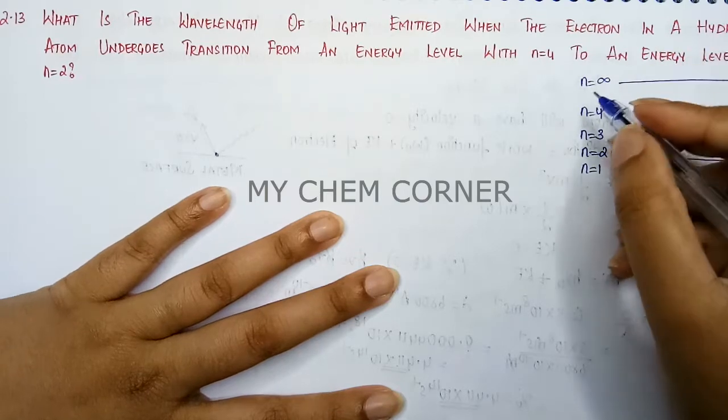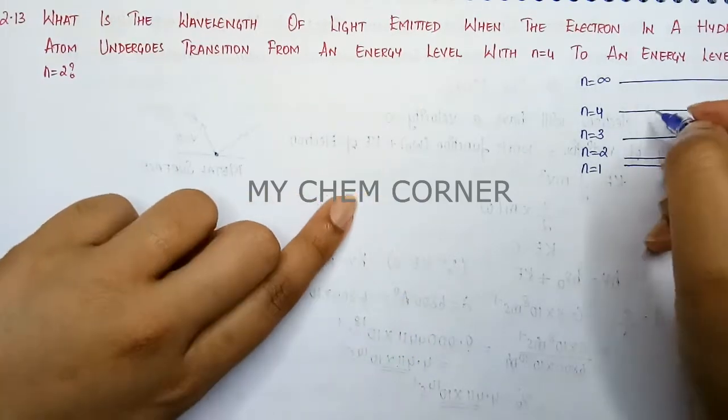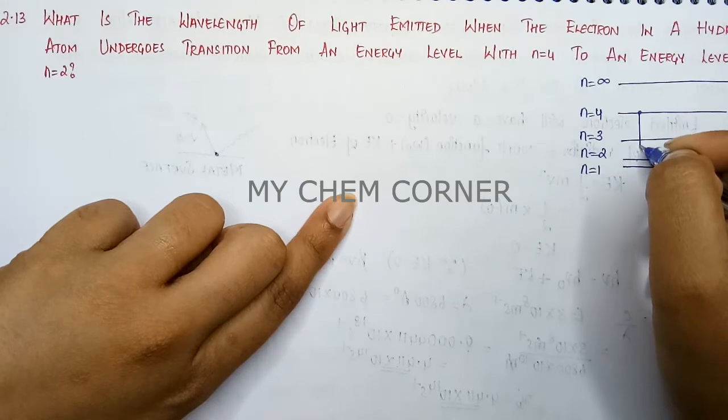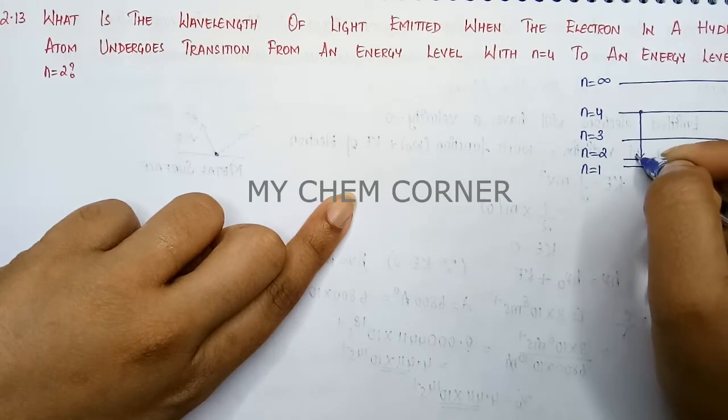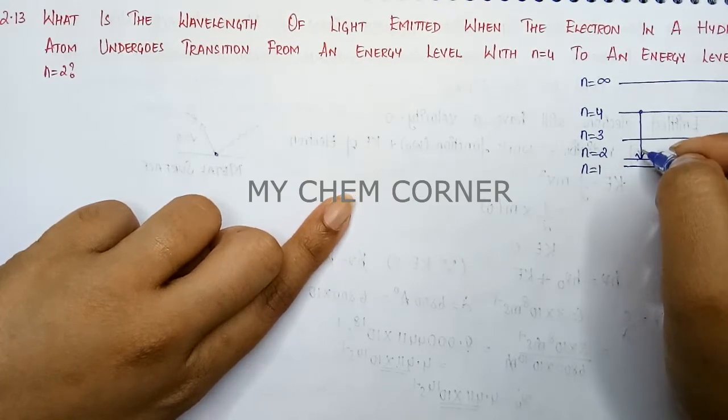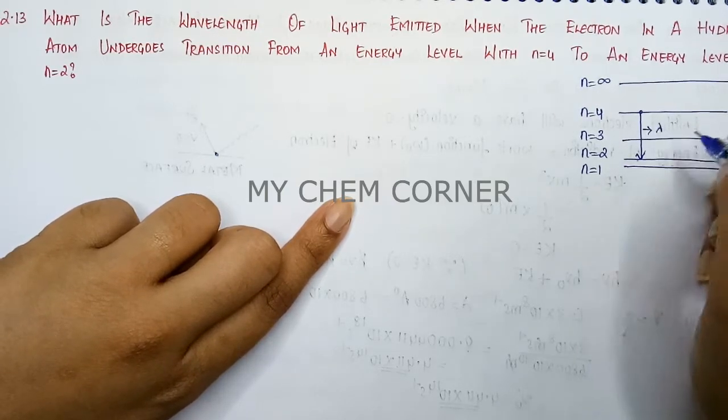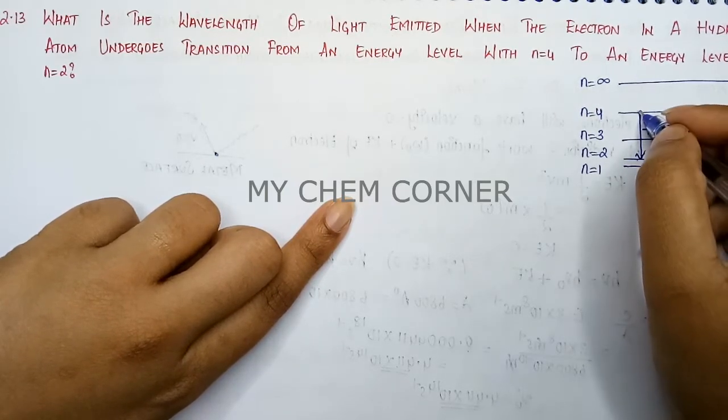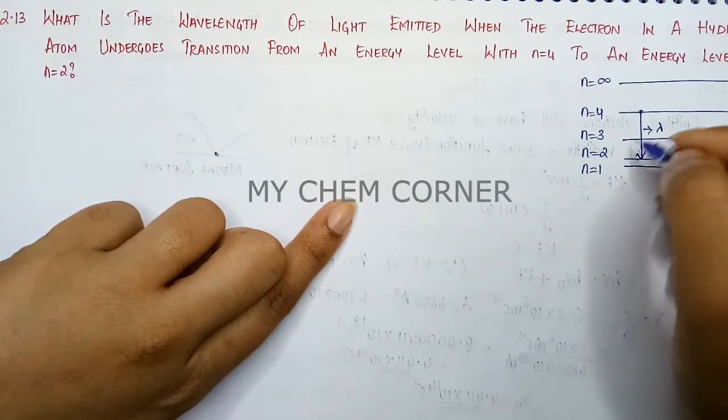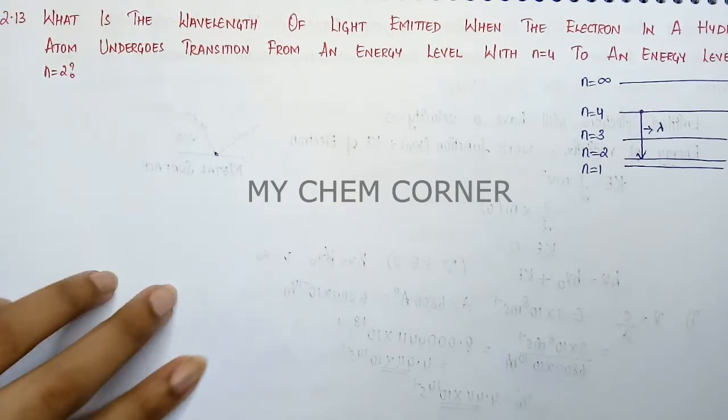In this problem it clearly says that it is falling from 4 up to energy level 2. So this is the transition. For this we need to see what is the wavelength of the light emitted when electron is jumping from 4 to 2. That is exactly what we have to find out.